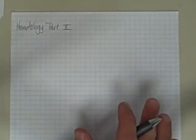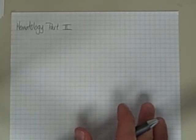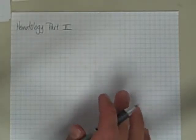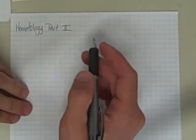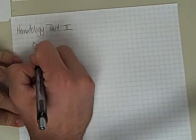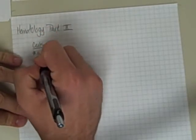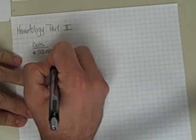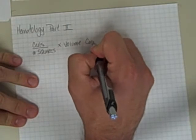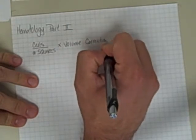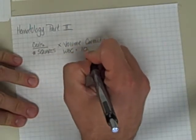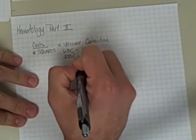Okay, so we kind of introduced the topic of counting things in a hemocytometer, so let's go through an example or two using a different way. I showed you the way which was cells over number of squares times the volume correction, which for a white blood cell square is 10 and for a red blood cell square is 250.